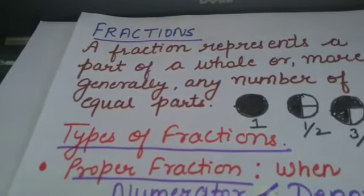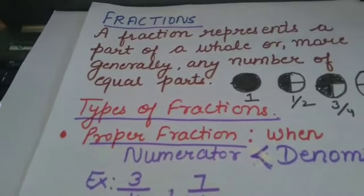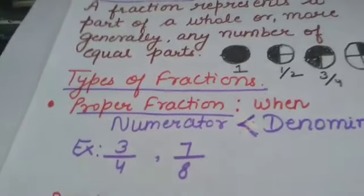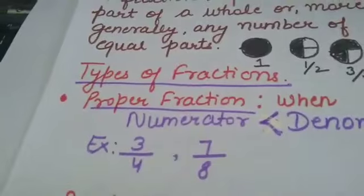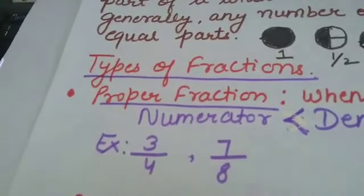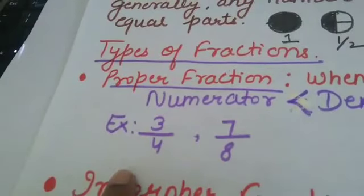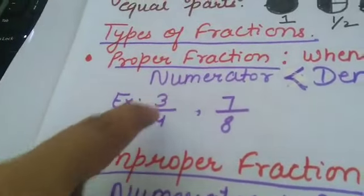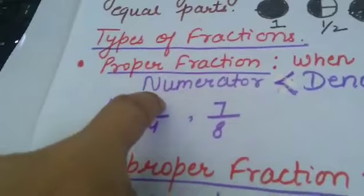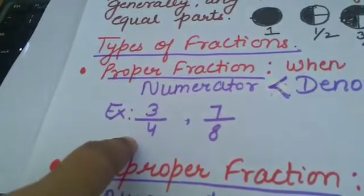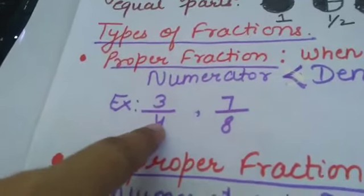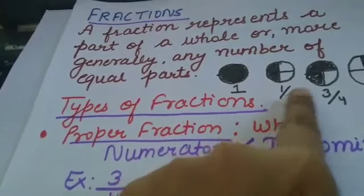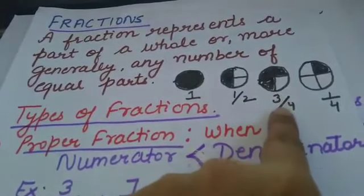Now let us discuss types of fractions. But first, let us discuss the numerator and denominator. Suppose 3 by 4 is a fraction. When writing a fraction there are 2 main parts: the numerator and the denominator. The numerator is how many parts you have. The denominator is how many parts the whole was divided into. So here, 1 is the numerator and 2 is the denominator. Here, 3 is the numerator and 4 is the denominator.